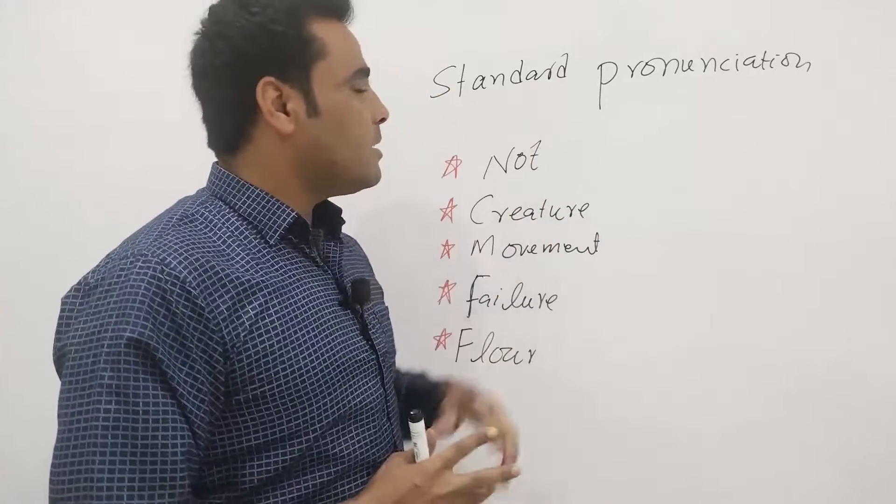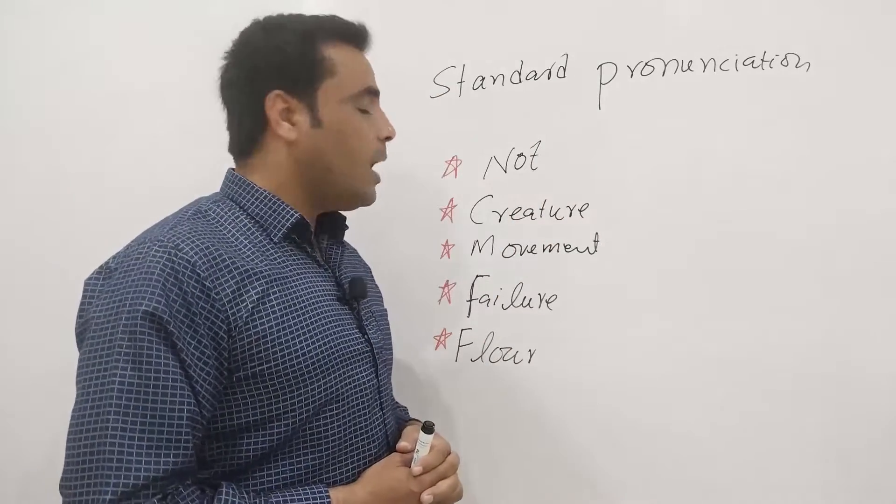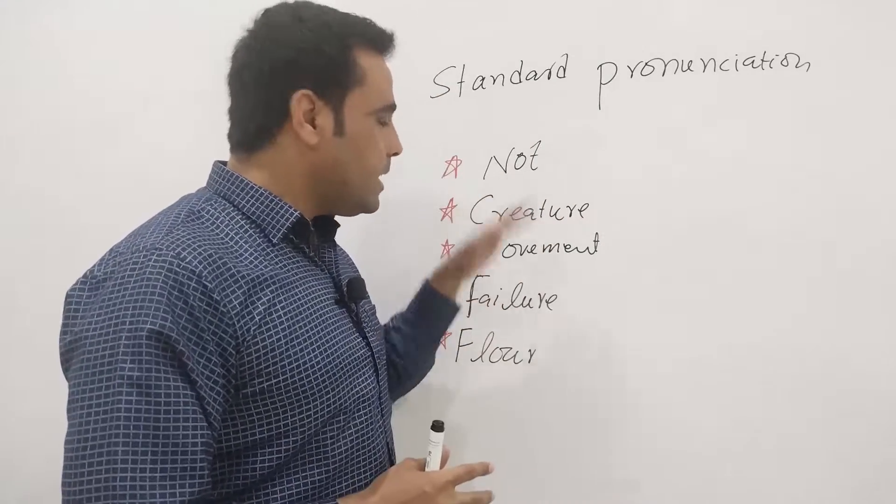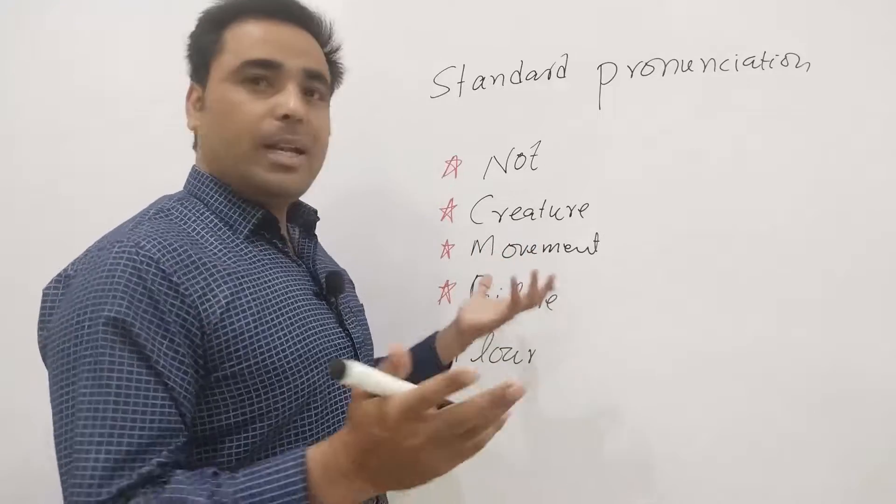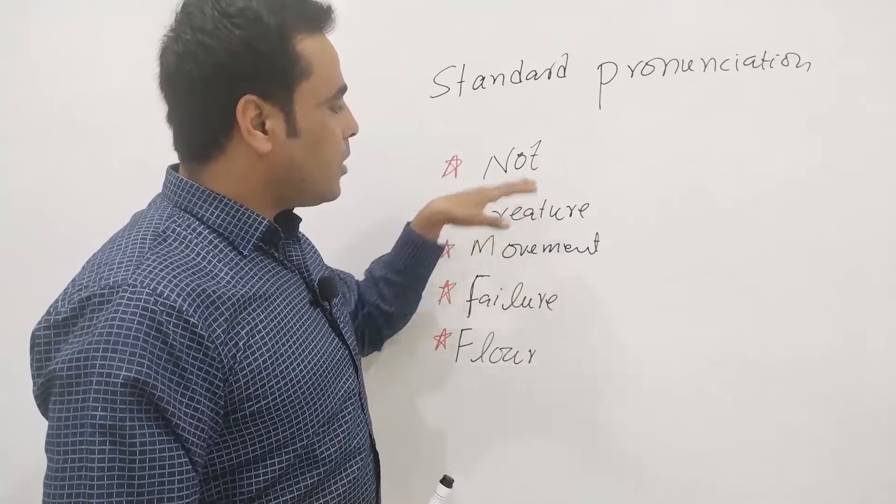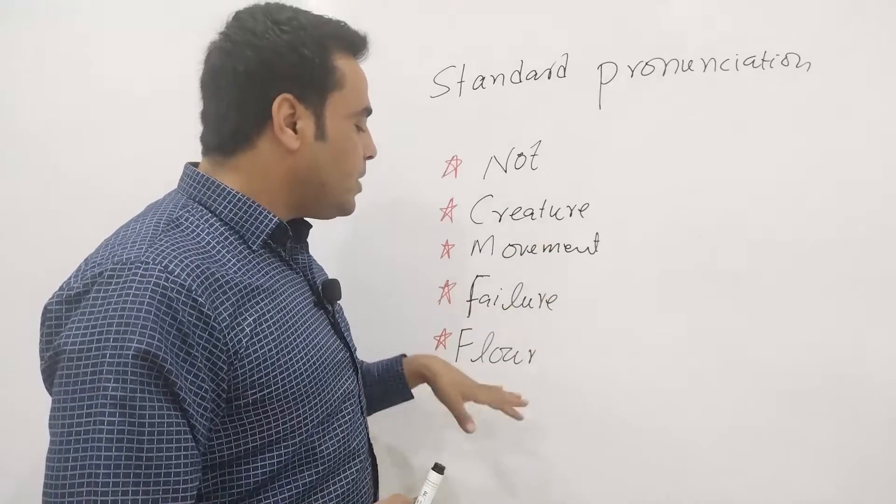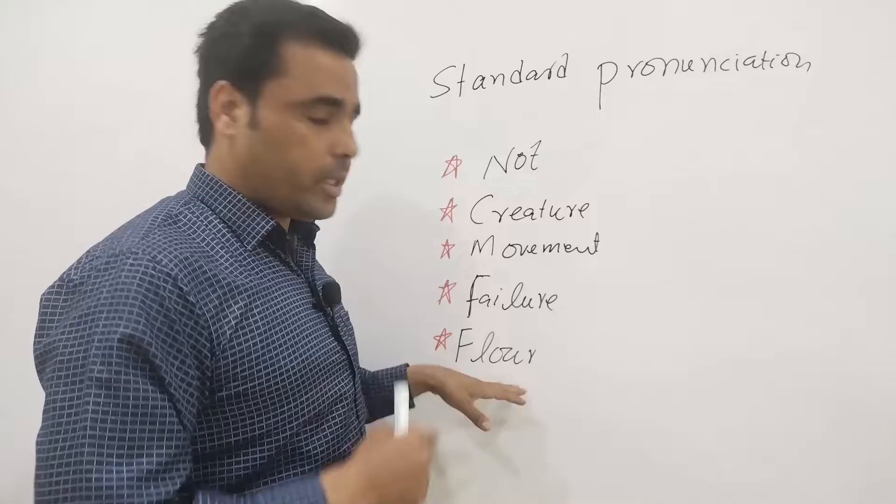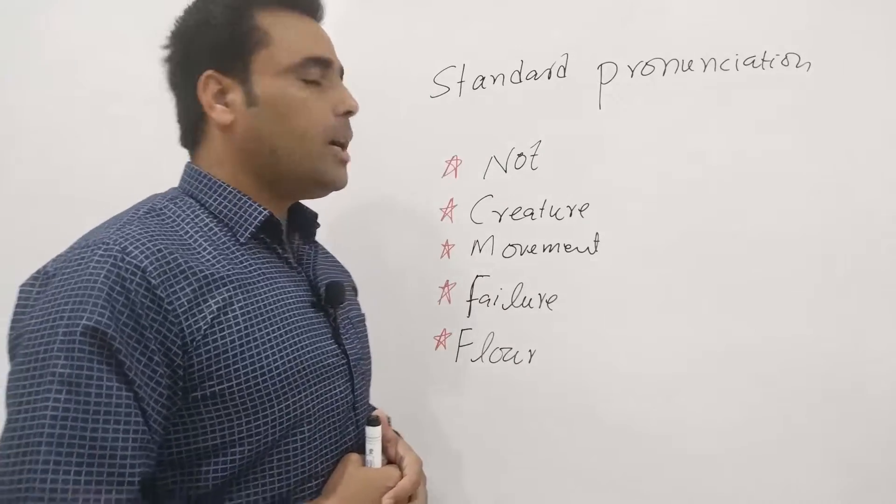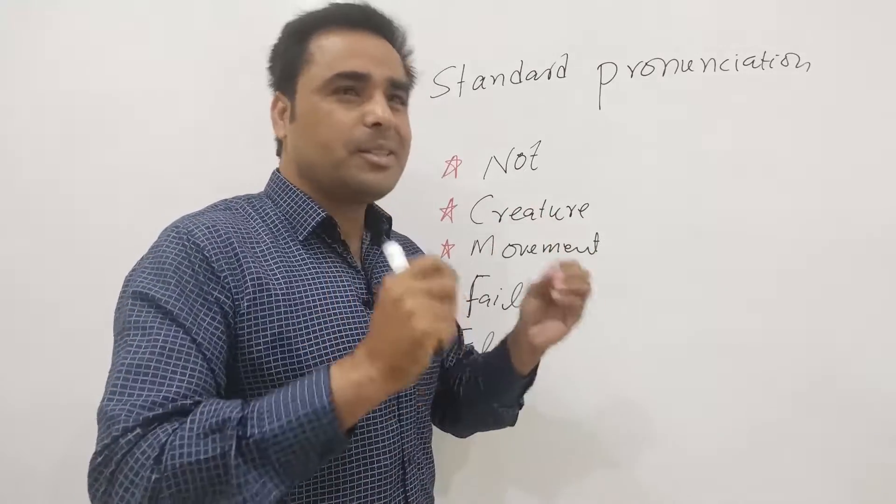The topic is again standard pronunciation. And the words are all these I have written on the board. Normally, we pronounce them such as not, creature, movement, failure, and flower. These are words that I hear mispronounced most often.